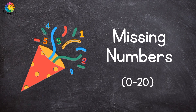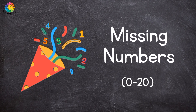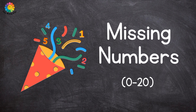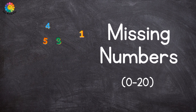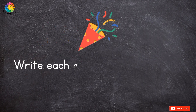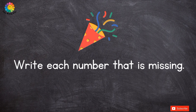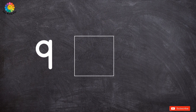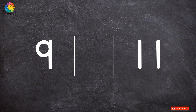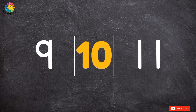Hello children, welcome back to my channel. Today we are going to learn missing numbers. Write each number that is missing. Let's start. What comes between 9 and 11? The answer is 10. 9, 10, 11.